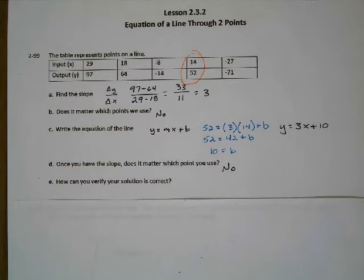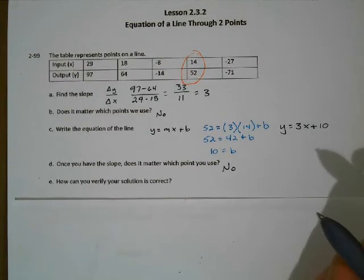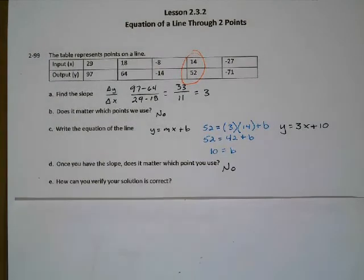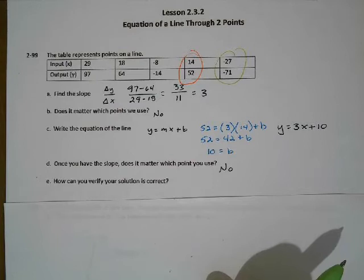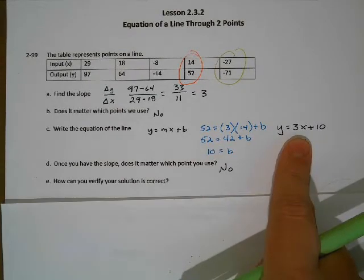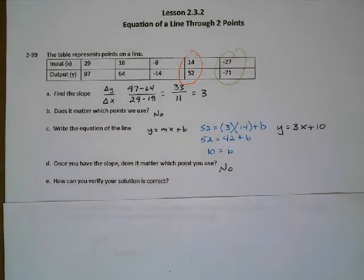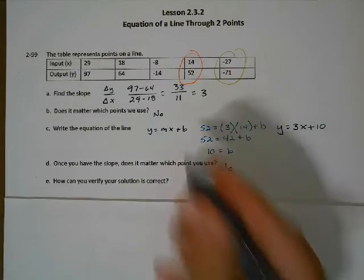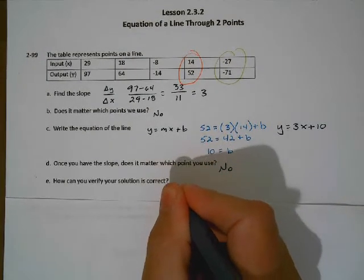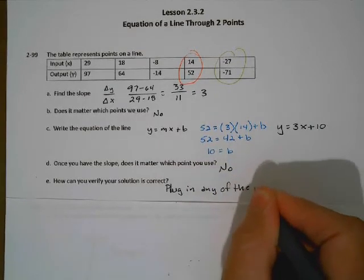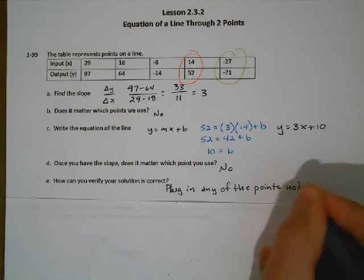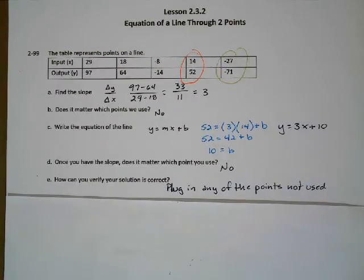How can we verify that we're correct? We should plug in one of the points we haven't used yet. We haven't used the point (negative 27, negative 71). If we plug in negative 27: 3 times negative 27 is negative 81, and negative 81 plus 10 is negative 71. Yes, it works. So to verify, just plug in any of the points not previously used. If it works out, we're done.